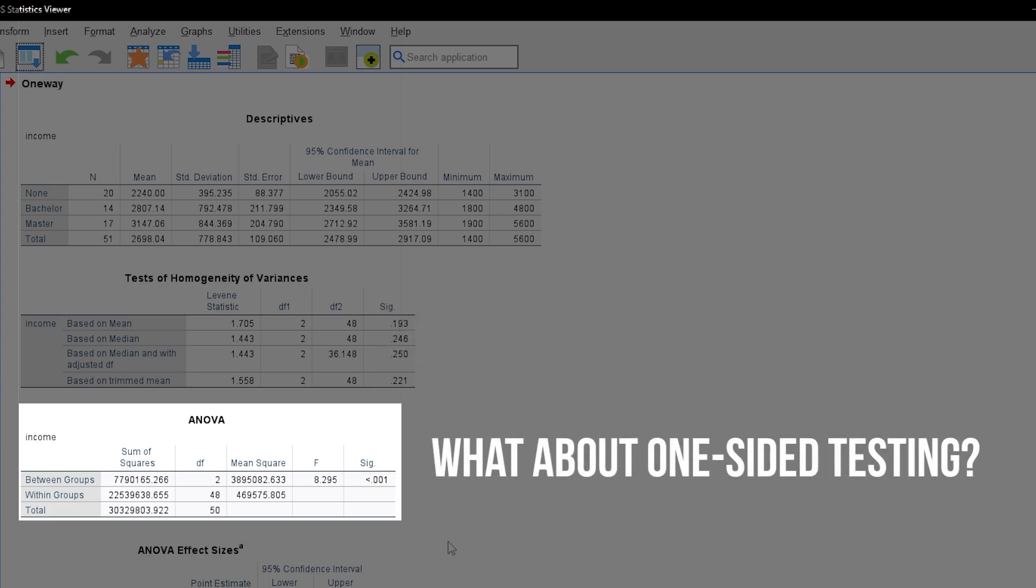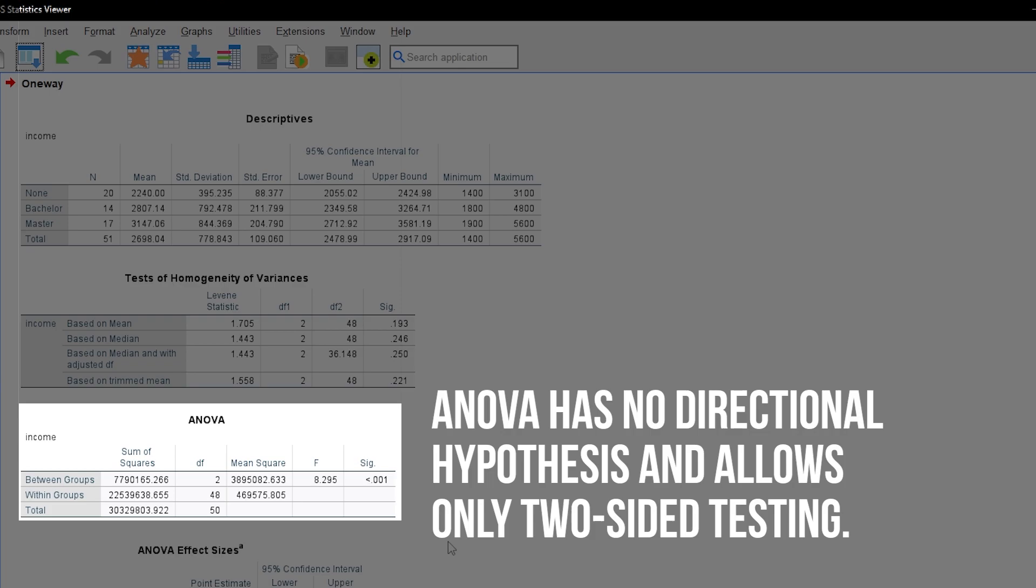Testing will always be two-sided by the way. In order to do a one-tail test, you have to be able to make a directional hypothesis. An ANOVA, however, is a non-specific test and only tells whether there is a difference or not. Since there are several means, you can't formulate a directional hypothesis.